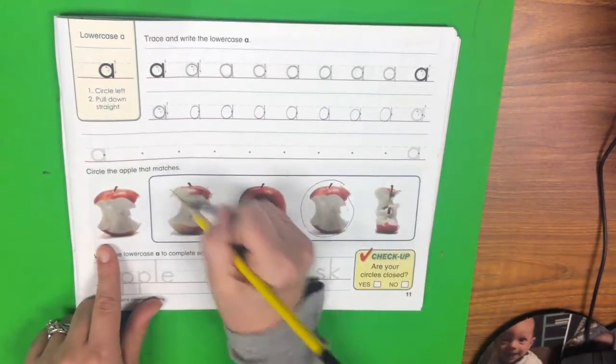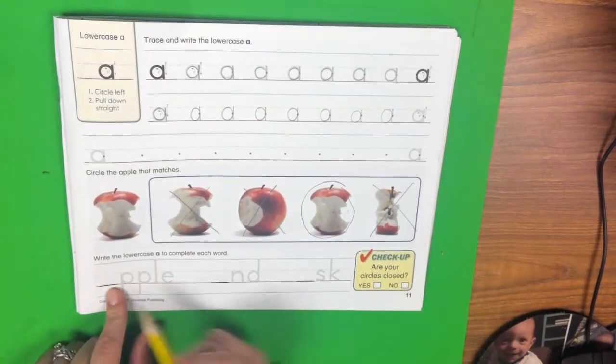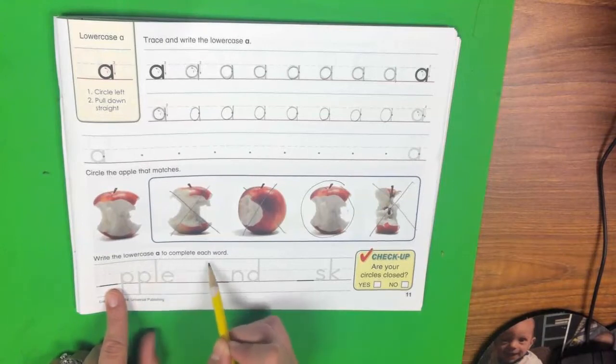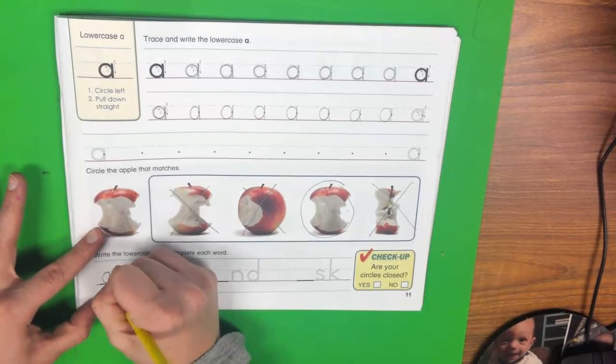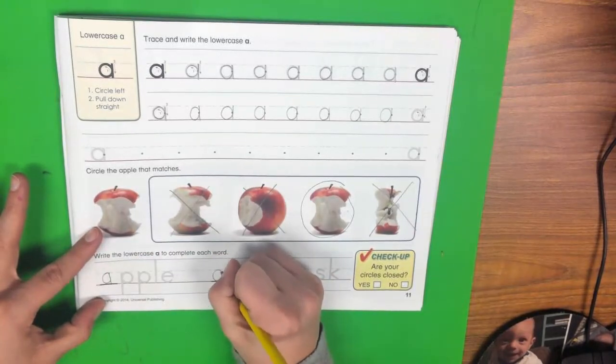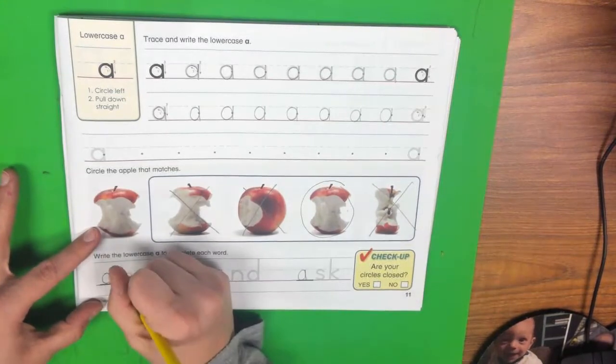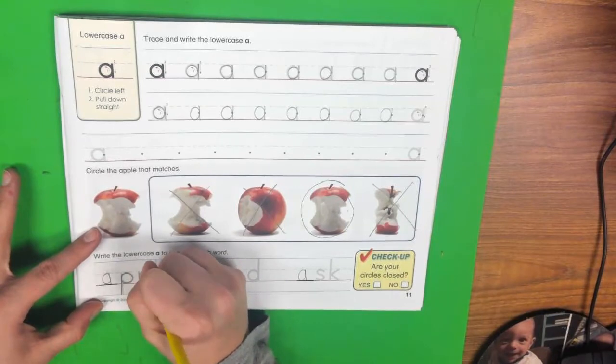And put an X on the ones that do not. Then you're going to come down here and it says write the lowercase a to complete each word. So you're going to fill in a lowercase a in each of these spots.